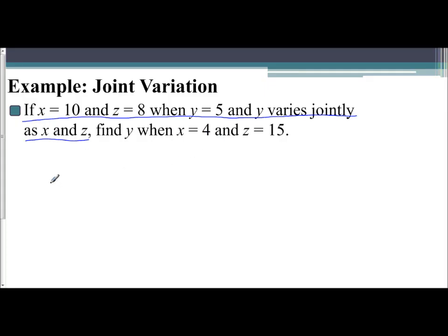So here's what we're told. We're told it's a joint variation. That allows me to use the formula y equals k times x times z. I'm given values of x. So x is 10, z is 8, and y is 5. So I can use this information to find my k value.